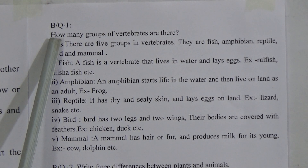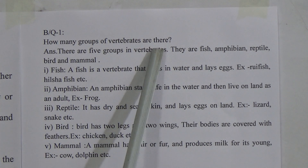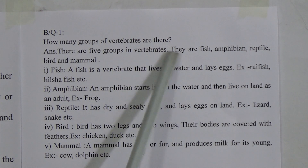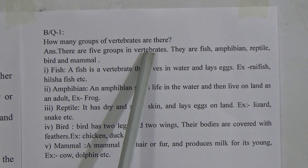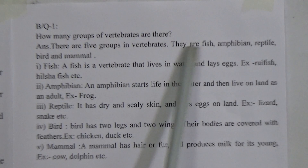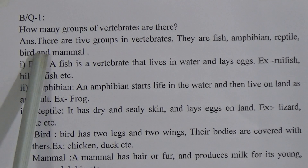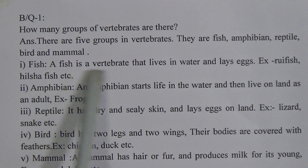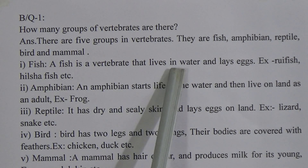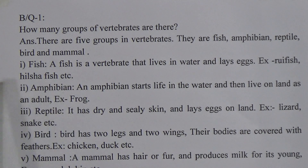Now for broad question number one: how many groups of vertebrates are there? There are five groups of vertebrates — fish, amphibian, reptile, bird, and mammal. First, fish: a fish is a vertebrate that lives in water and lays eggs. Examples include rui fish, hilsha fish, etc.